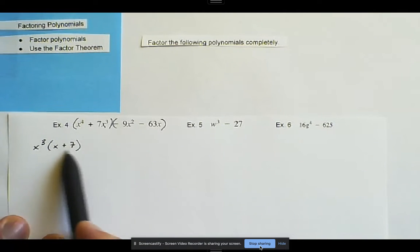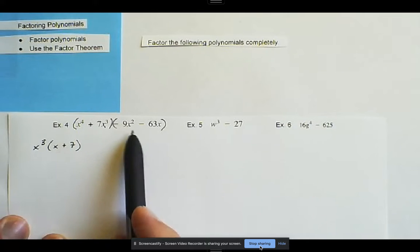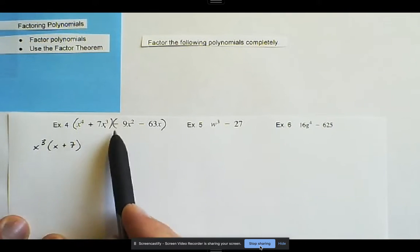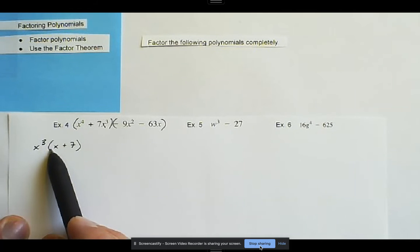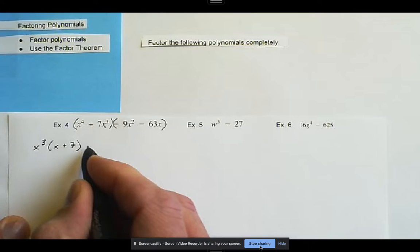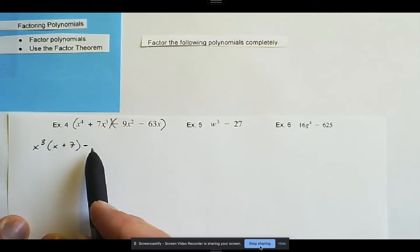So right away we can factor out an x to the third, and that would leave us with x plus seven. Now, if we look at the first group here, we want to make our first binomial, we want to make our second binomial exactly the same, and what we notice is we have a lead coefficient that's positive, so here we have a lead coefficient that's negative, so I'm going to have to factor out that negative.